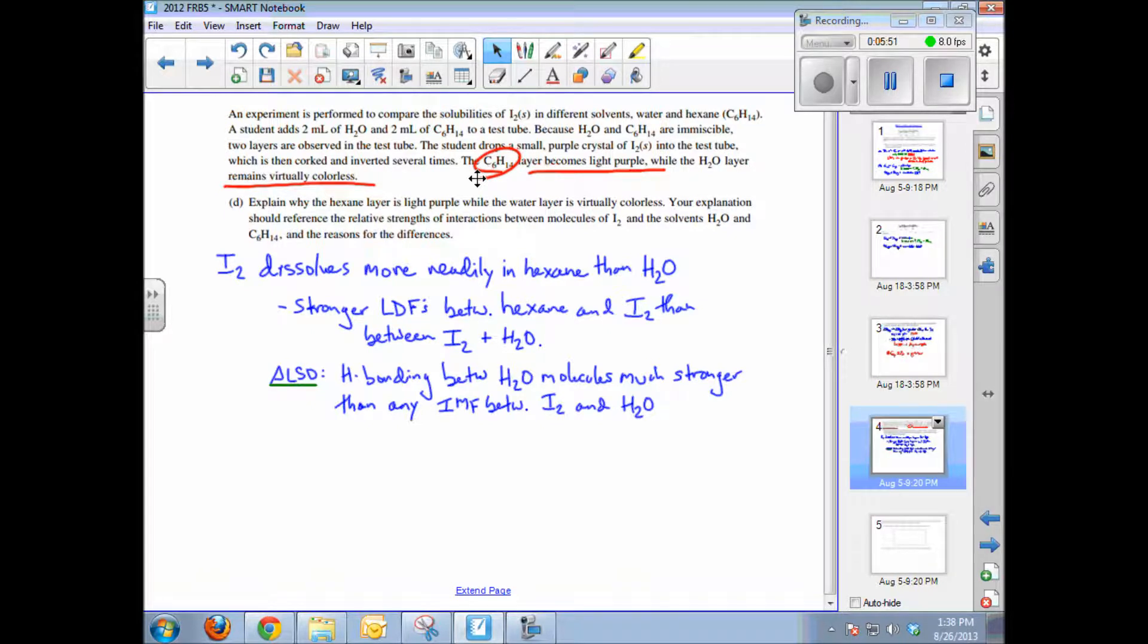So that means that the iodine has dissolved into the hexane layer but not the water layer. Why? That's the question. Your explanation again should include the relative strength of interactions between iodine and both water and hexane and the reason for those differences. Now why is the hexane layer purple? Because iodine dissolves more readily in hexane than in water.